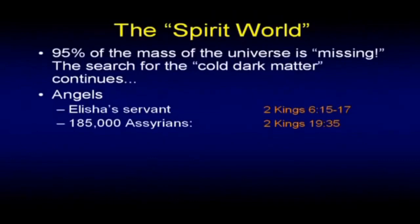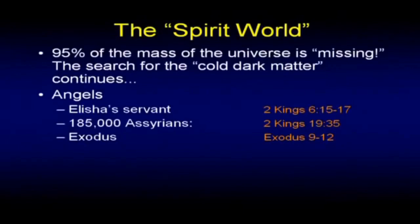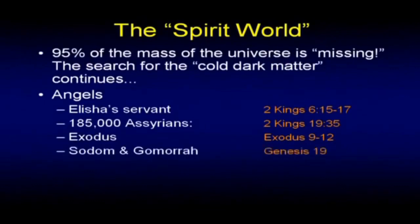There's also a case of one angel who, after dinner one night, slaughters 185,000 Assyrians — 2 Kings 19. If nothing else, it tells you: you don't mess with angels. 185,000 — that's huge. And then of course there's the whole issue of Exodus chapters 9 through 12, all the plagues of Egypt. And Sodom and Gomorrah in Genesis 19 — there's an intervention in their lives from outside what we normally think of as reality.